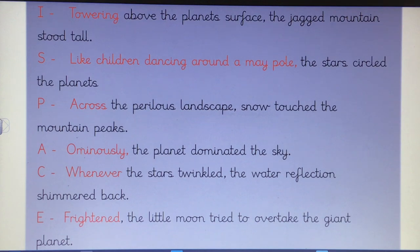C for conjunction. We've got whenever the stars twinkled, the water reflection shimmered back. So you've got your conjunction there at the beginning. And you're saying whenever the stars twinkled, so when it's happening.